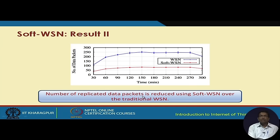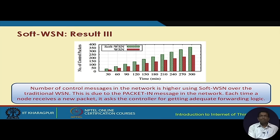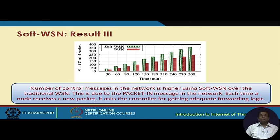A third result shows that the number of control packets in the network is higher using the proposed Soft-WSN protocol compared to traditional WSN. This is because each time a node receives a new packet, it asks the controller for the appropriate forwarding logic, which is why the number of control messages in the network is reduced over time.